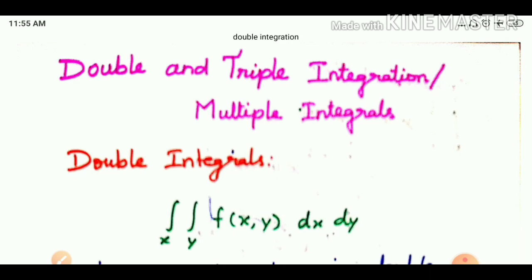We have already covered how to use integration and differentiation. Double integration is used to identify two-dimensional moving objects, and triple integration is used to identify three-dimensional moving objects.